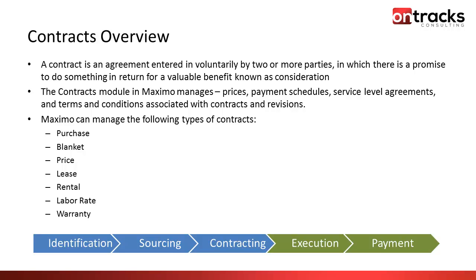The different types of contracts that Maximo manages are purchase, blanket, or price contracts bundled under the purchase agreement type, lease and rental contracts, labor rate contracts, and warranty contracts.